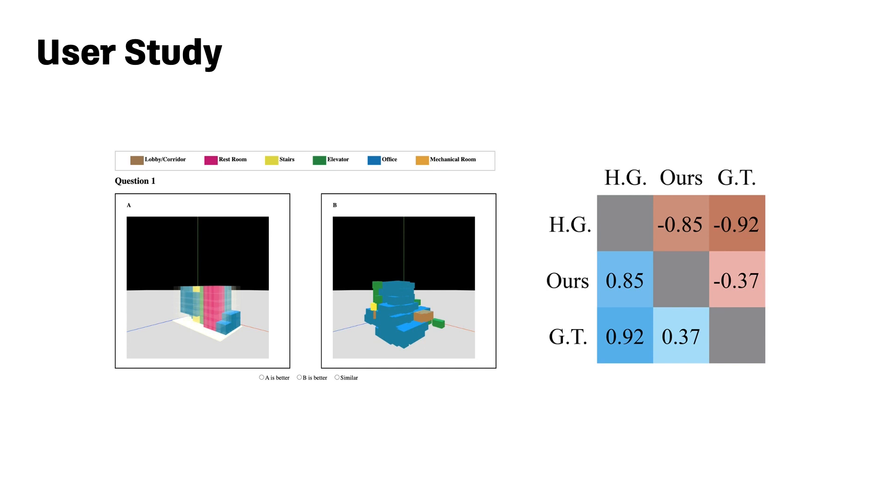To further evaluate the results, we also conducted a user study where professional architects are asked to compare randomly sampled pairs of volumetric designs. The results show that most architects choose ours over HouseGAN and they often got confused choosing between Building GAN and the ground truth.